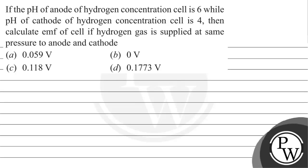Hello Bacho, let's read this question. The question says: if the pH of the anode of a hydrogen concentration cell is 6, while the pH of the cathode of the hydrogen concentration cell is 4, then calculate the EMF of the cell if hydrogen gas is supplied at the same pressure to both anode and cathode. Option A is 0.059V, Option B is 0.14V, Option C is 0.118V, Option D is 0.1773V.